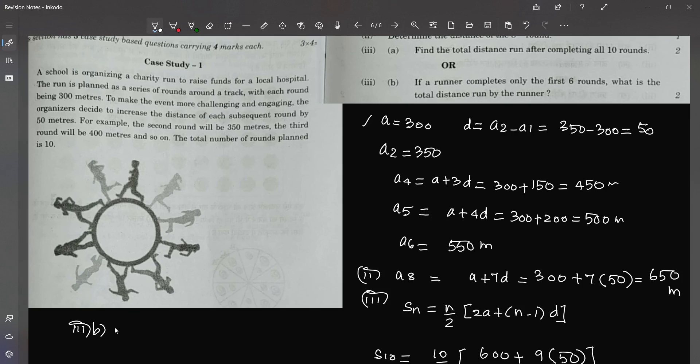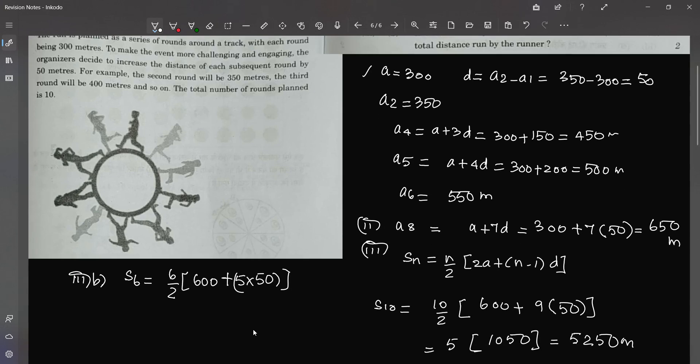So the answer will be 6 by 2, 2 times a is 2 times 300 which is 600 plus 6 minus 1 is 5, 5 times 50. So the answer for that question will be 600 plus 250 which is 850, 3 times 850. So the answer for this question is 2,550.